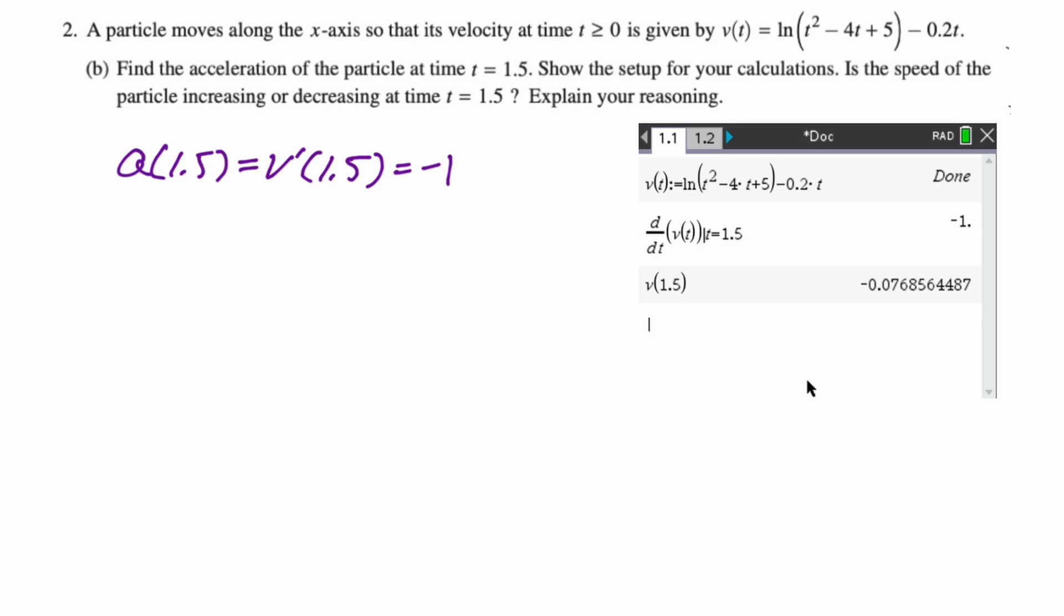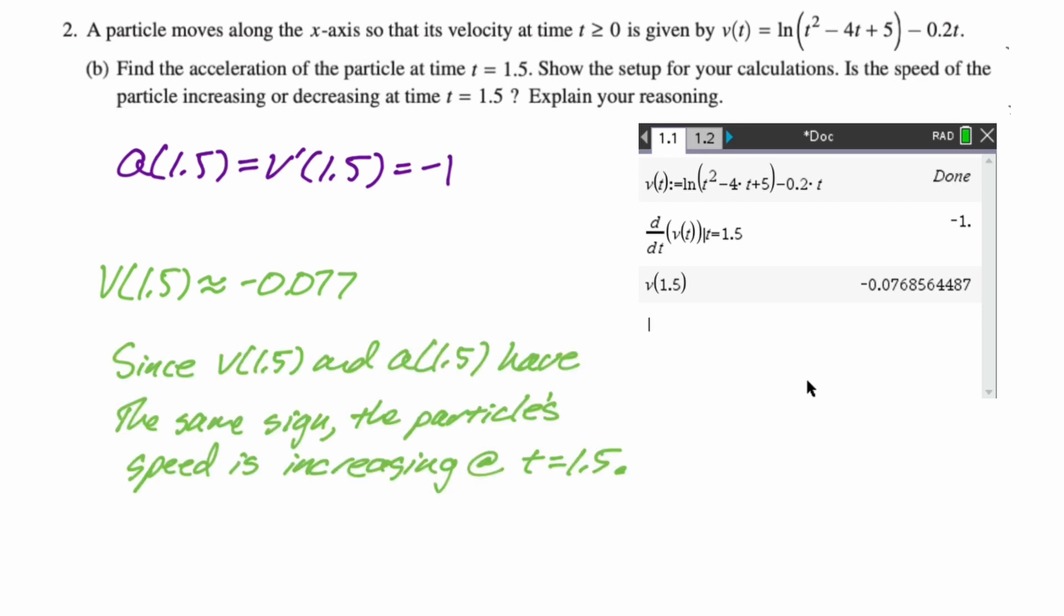Now what we need to do is decide if the speed is increasing or decreasing. If velocity and acceleration have the same sign, speed will be increasing. If they have opposite signs, speed will be decreasing. Both of them are negative here, so speed will be increasing. But at no point in time yet have I written down the sign of v of 1.5, so I thought I should probably do that. So I wrote v of 1.5 is approximately negative 0.077. And then I said, since v of 1.5 and A of 1.5 have the same sign, the particle speed is increasing at t equals 1.5.